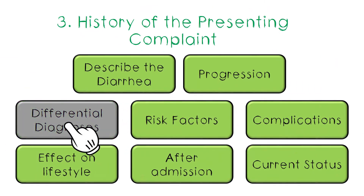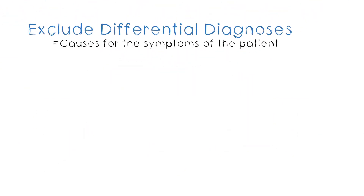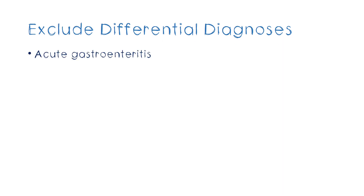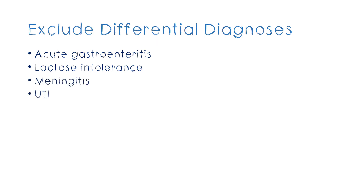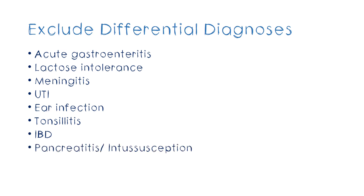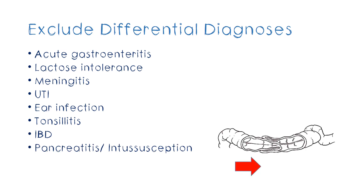Then we have to ask some questions to exclude the differential diagnoses — the list of conditions that can explain or cause the particular features the patient has. For this patient with diarrhea, the causes could be acute gastroenteritis, lactose intolerance meaning the inability to digest dairy products, meningitis, urinary tract infections, ear infections, sore throat or tonsillitis, inflammatory bowel disease, and pancreatitis. Intussusception is a condition where one segment of bowel telescopes inside another part of the bowel, giving rise to a reduction in blood supply to the intestine. It can also be due to certain drugs and even simple things like overfeeding.